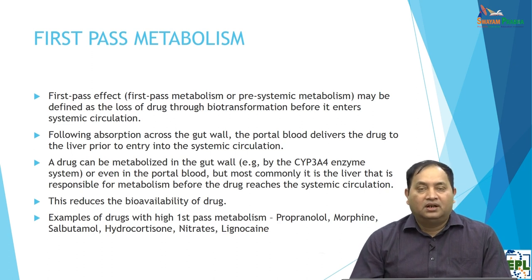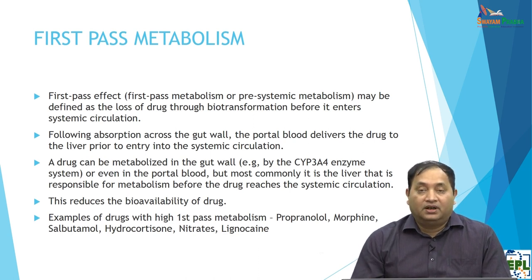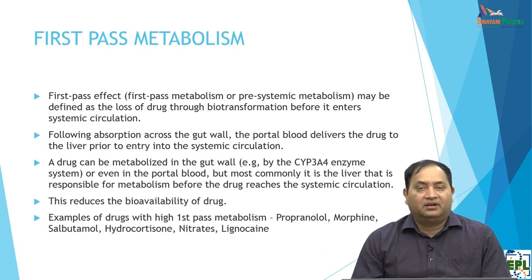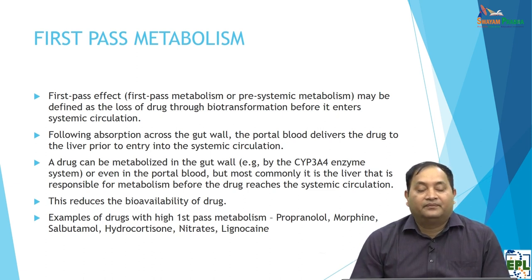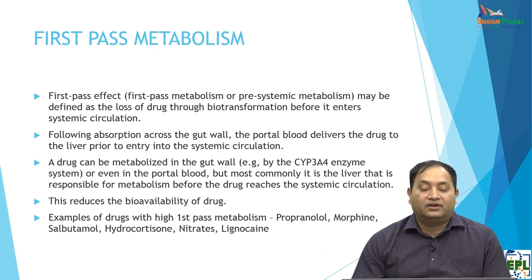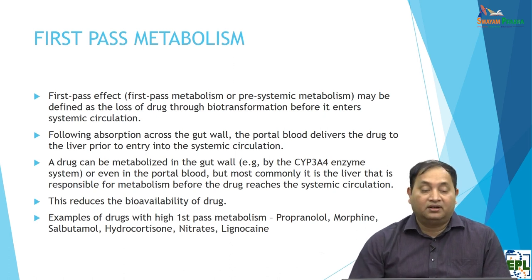Examples of drugs with significant first-pass metabolism include propranolol, morphine, salbutamol, hydrocortisone, nitrates, and lignocaine. First-pass metabolism means loss of drug through biotransformation — the drug is not reaching systemic circulation because presystemic metabolism takes place.